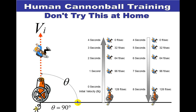Let's look at shooting the cannon at an angle theta of 90 degrees — straight up. With an initial velocity of 128 feet per second, after one second we lose 32 feet per second due to gravity, leaving 96. After two seconds he's traveling 64 feet per second, after three seconds 32 feet per second, and after four seconds zero feet per second — his maximum height. Then gravity pulls him back down: 32, then 64, then 96, then 128 feet per second back to the ground.